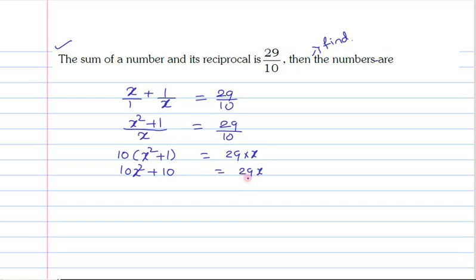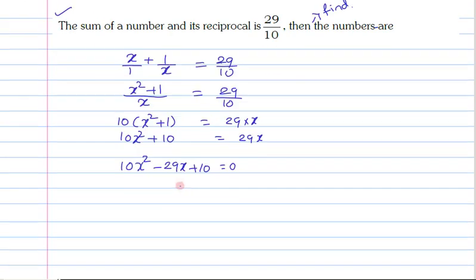And transporting this 29x to the other side of the equation, we get a quadratic equation as 10x square minus 29x plus 10 is equal to 0. This is a quadratic equation. Now, the roots of the quadratic equation are the solution for our required question.